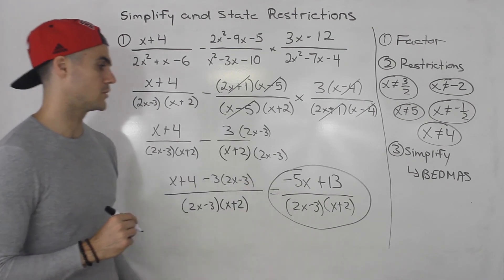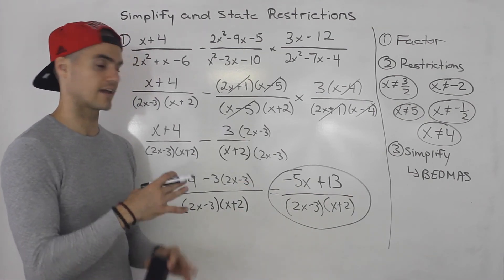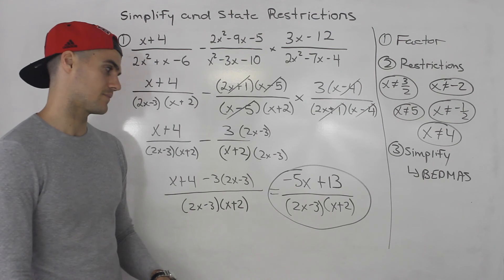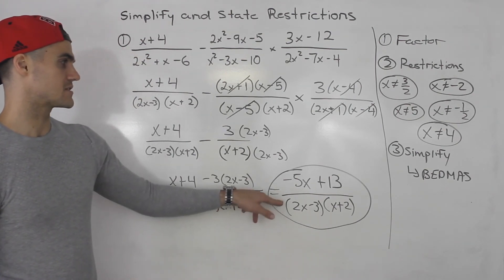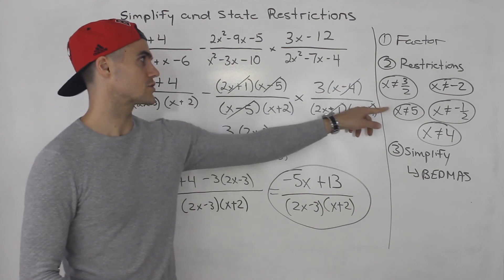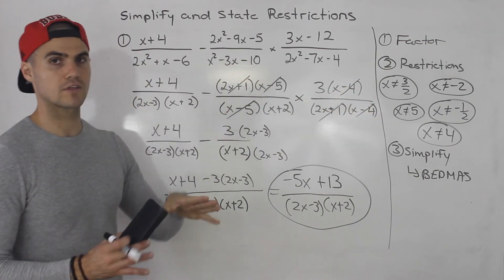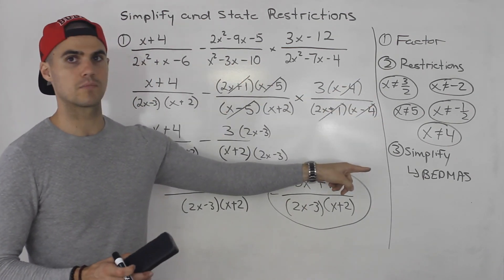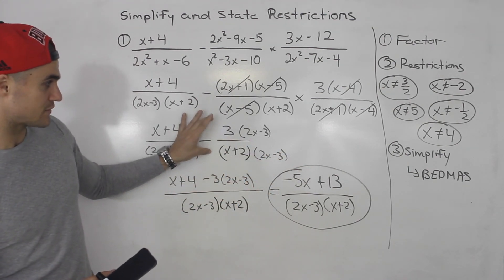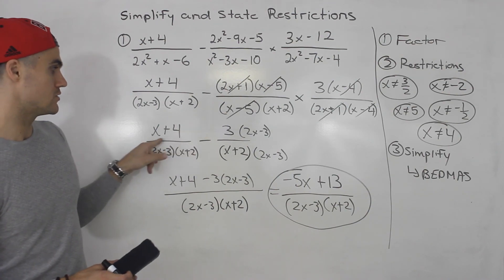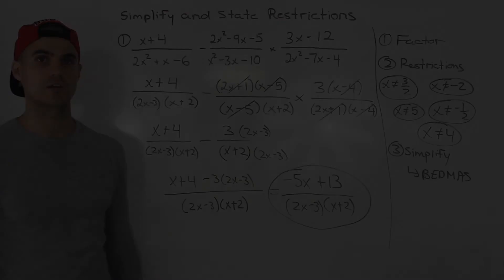You could also take out a negative from the numerator. So you could write as negative bracket 5x minus 13. Or you could just keep it like that. But anyway, that's what it simplifies to, and those are the restrictions. So when you're combining operations, everything is the same. Just make sure you're following BEDMAS. Always doing the multiplication or division first. And then from that simplified rational expression, you do the addition or subtraction.